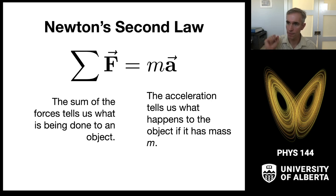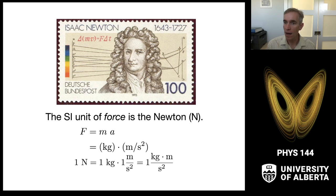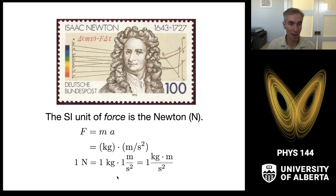A few things to note about F = ma: it's a vector equation — forces are vectors, accelerations are vectors. The left-hand side tells us what is happening to an object; the right side tells us how that object responds given its mass m. The SI unit of force is the Newton, a compound unit. Dimensional analysis tells us a Newton equals a kilogram times a meter per second squared (kg·m/s²). That is how we define a Newton.